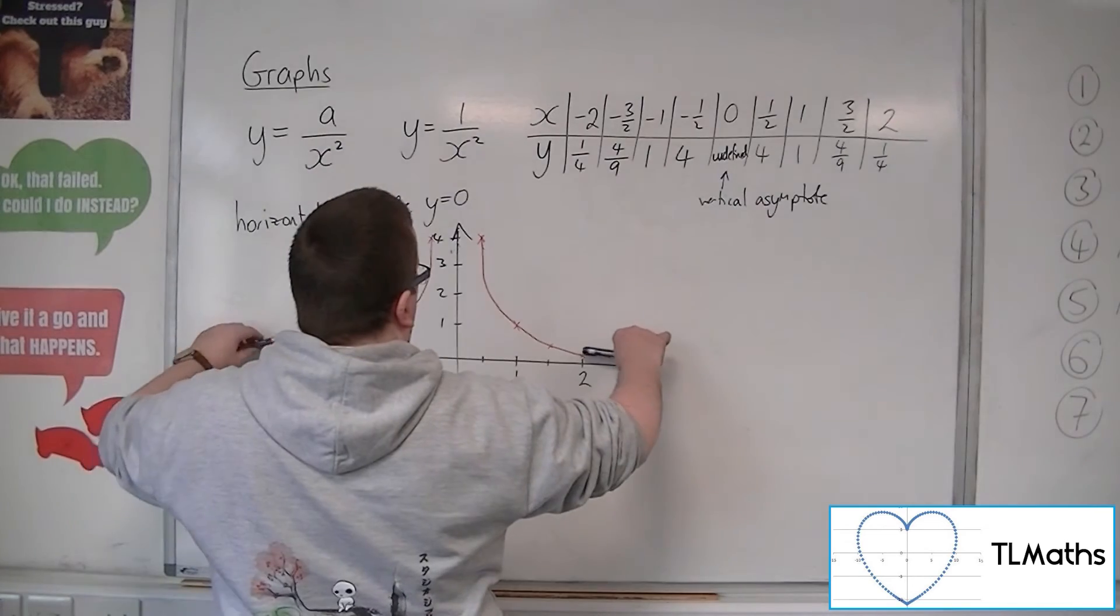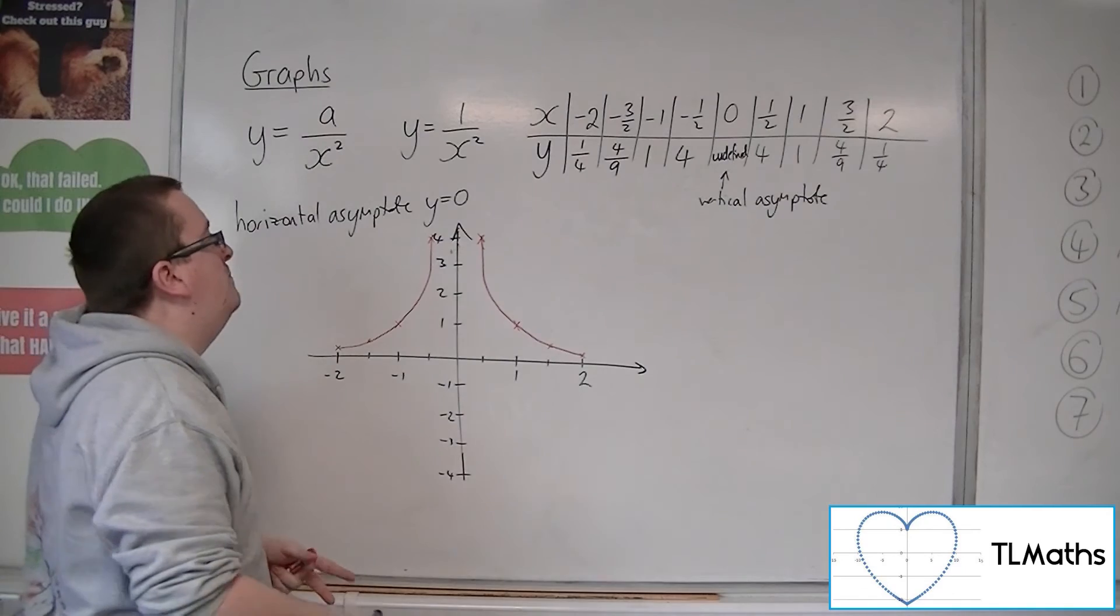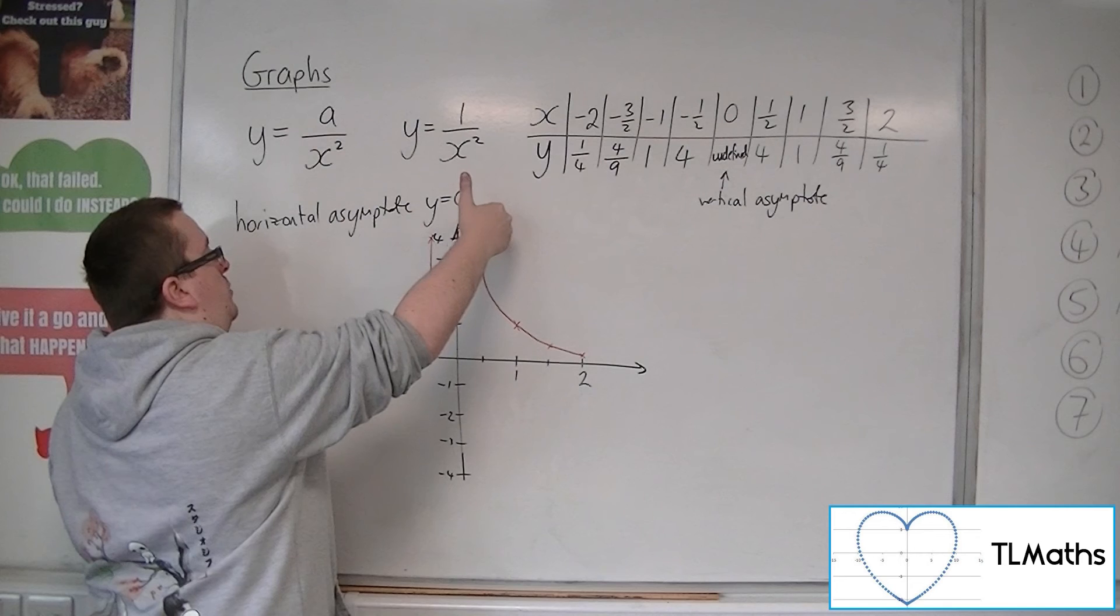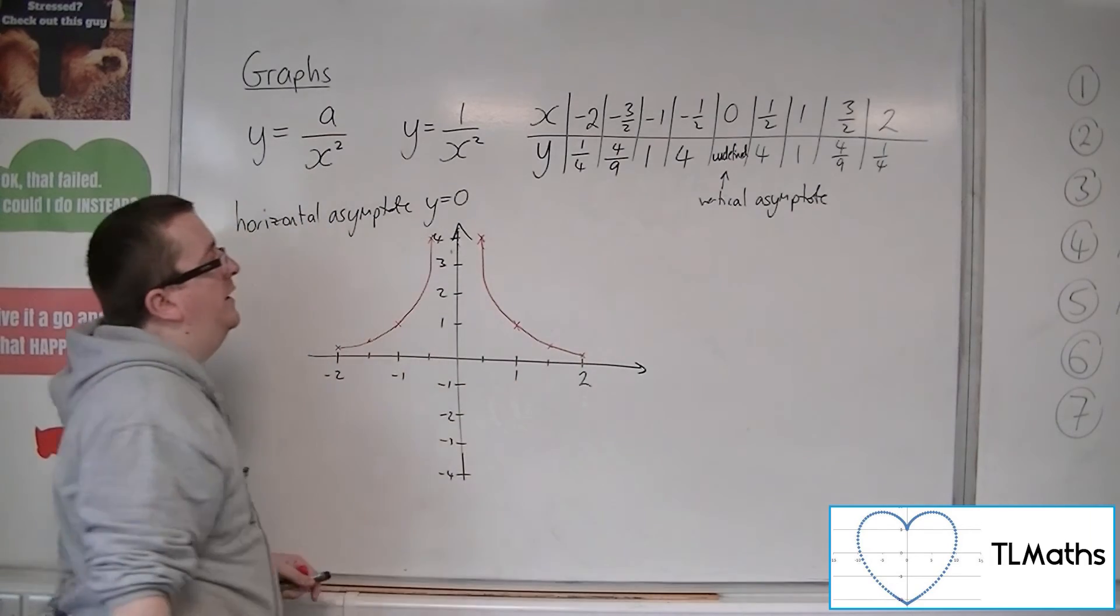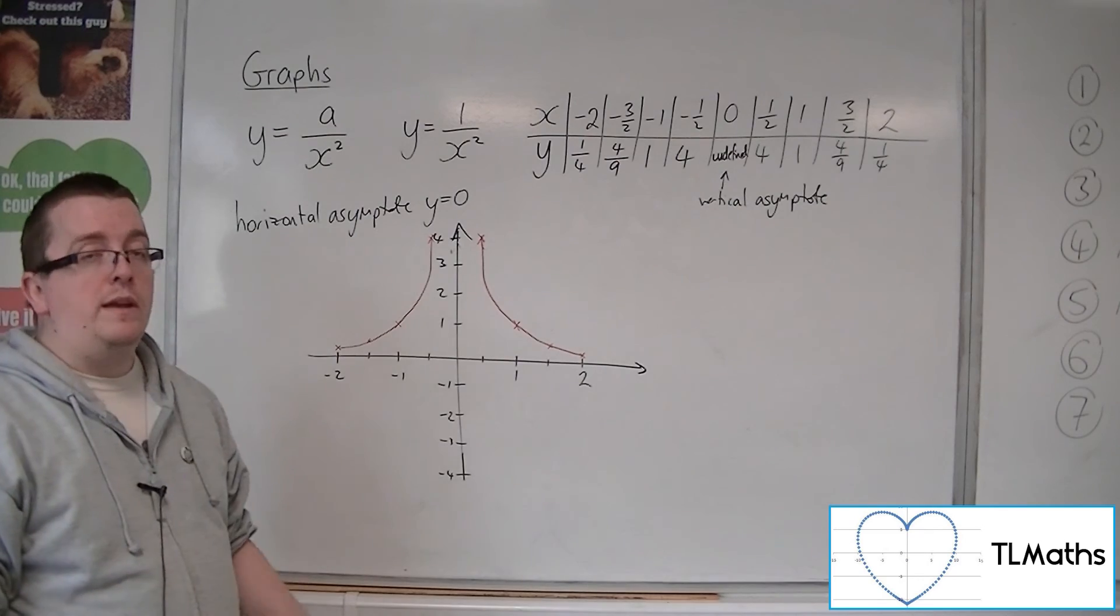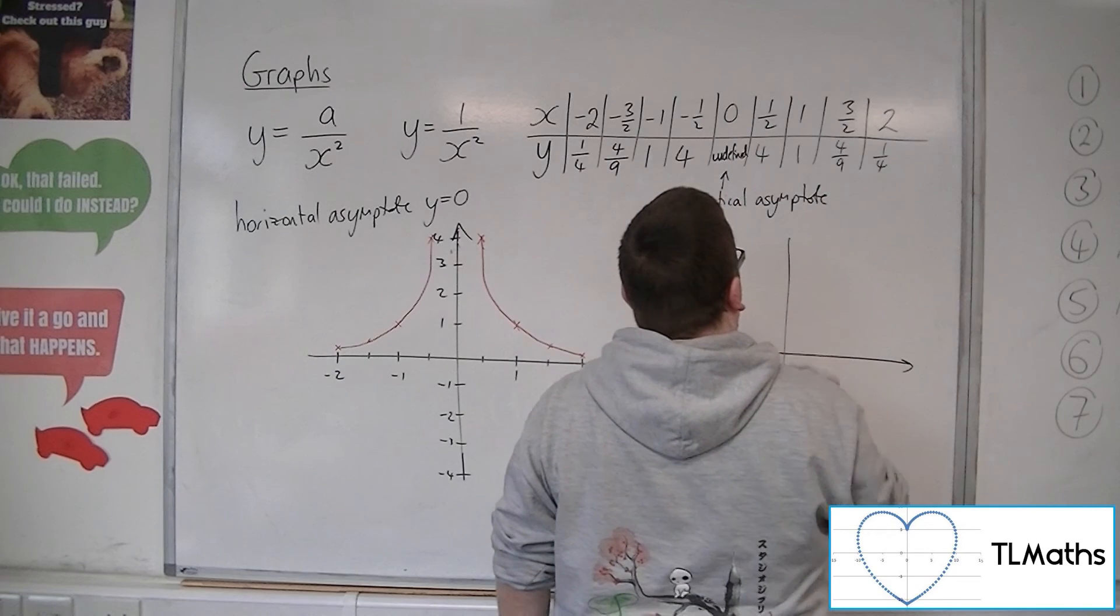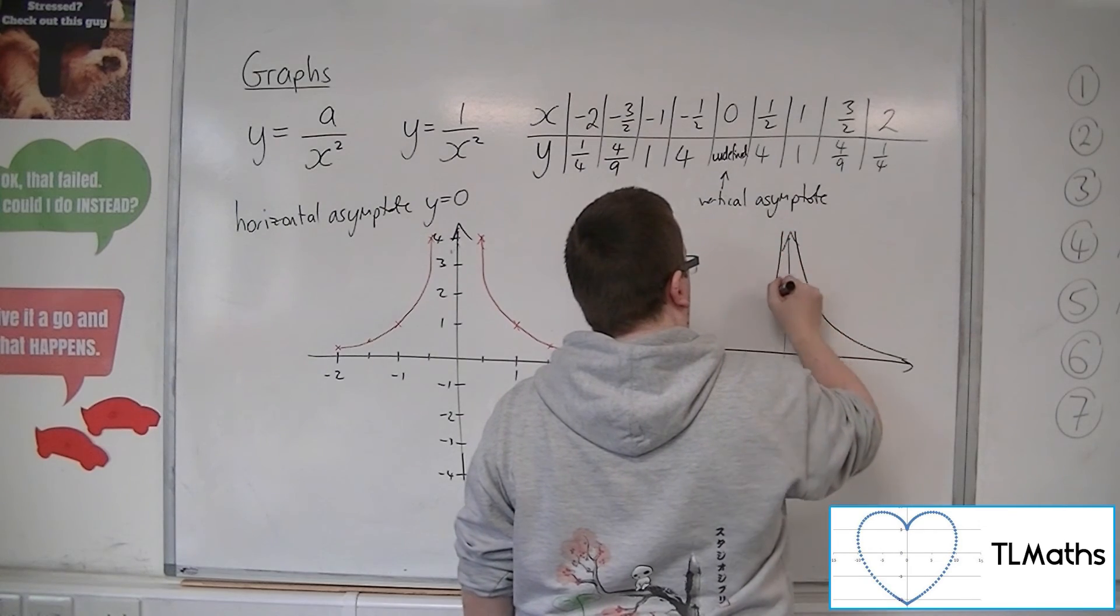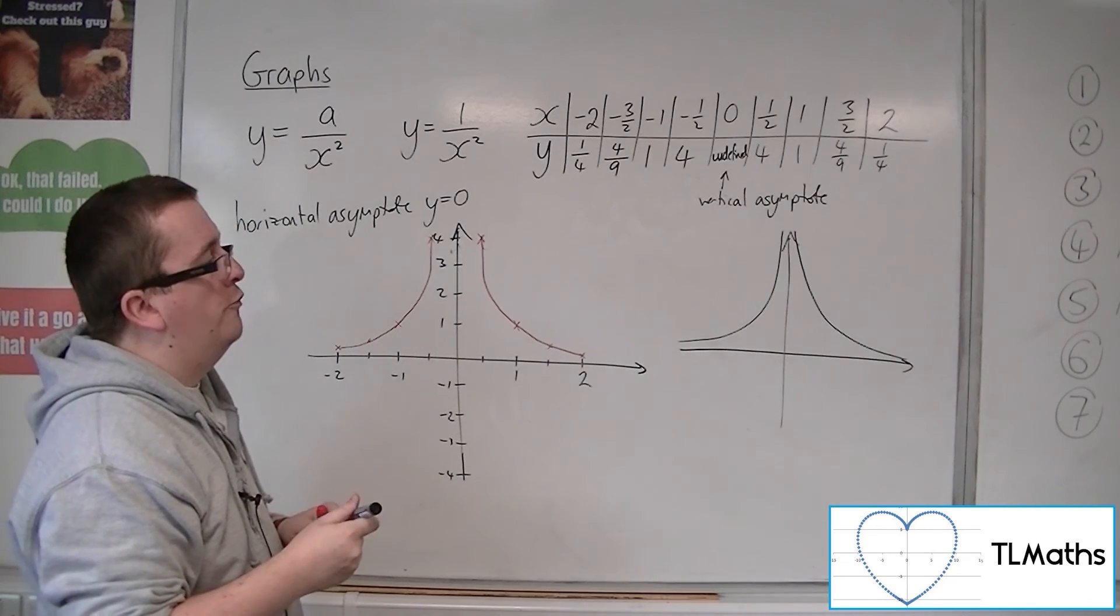The curve clings tighter to the axes because it increases faster as you approach the y-axis and decreases faster as you move away, due to that x². In general, a 1/x² graph would look like this.